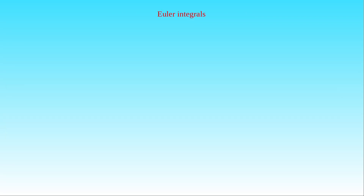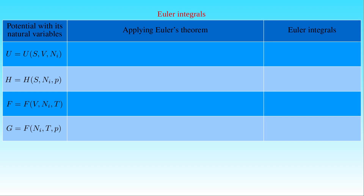We now apply Euler's theorem for the thermodynamic potentials to write them as Euler integrals. Since the natural variables of the internal energy U are the entropy S, the volume V, and the number of particles Nᵢ, the internal energy is a homogeneous function of degree 1 in all its natural variables. By applying Euler's theorem, U can be written as the partial derivative of U with respect to S at constant V and Nᵢ times S, plus the partial derivative of U with respect to V times V, plus the sum of the partial derivative of U with respect to Nᵢ at constant S, V, and Nⱼ (j ≠ i) times Nᵢ, where i runs from 1 to N.